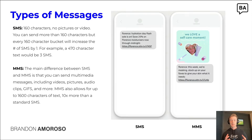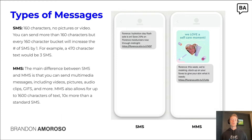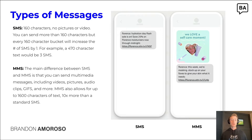For example, if you were to send a 470-character text, that would be three SMS messages. The second type is MMS, and the main difference between SMS and MMS is that you can send multimedia messages via MMS — including videos, pictures, audio clips, GIFs, and other types of multimedia.